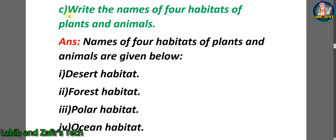Question C: write the names of four habitats of plants and animals. Answer: the four habitats are — number one: desert habitat; number two: forest habitat; number three: polar habitat; and number four: ocean habitat.